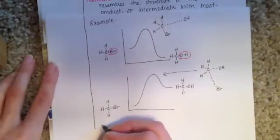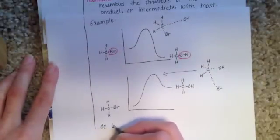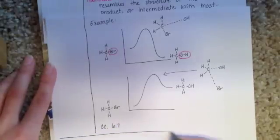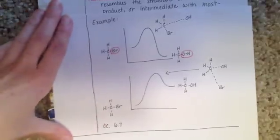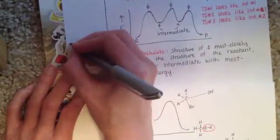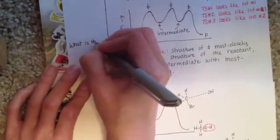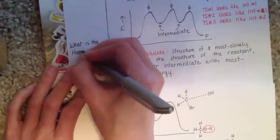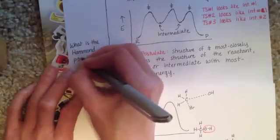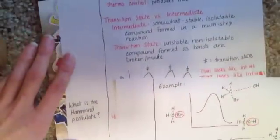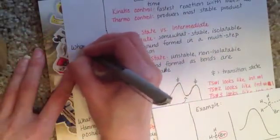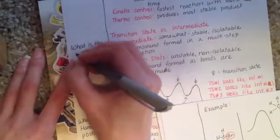You can practice this with conceptual checkpoint 6.7 and the associated problems. Your study questions for this section are: What is the Hammond postulate? What is the difference between an intermediate and a transition state? And what is the difference between kinetic and thermodynamic control?